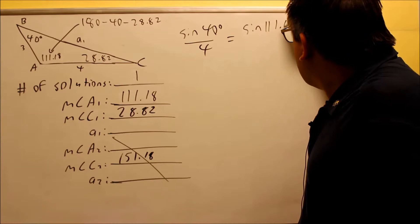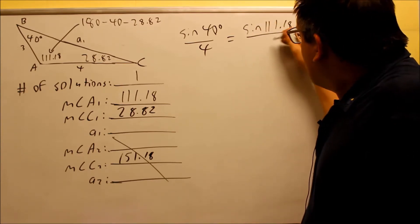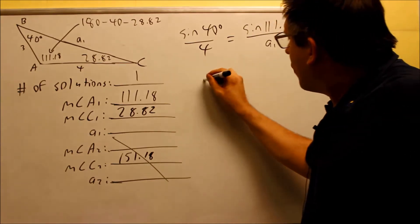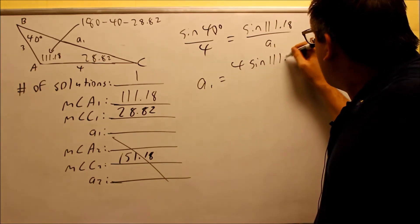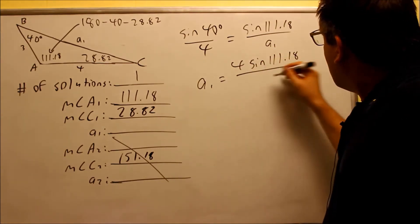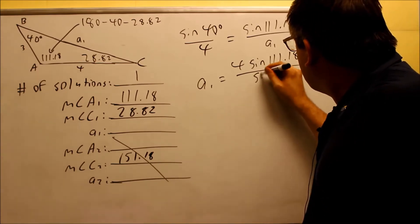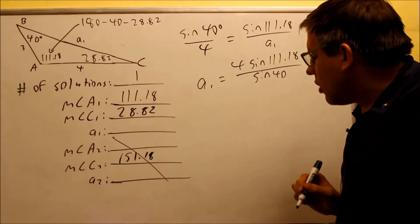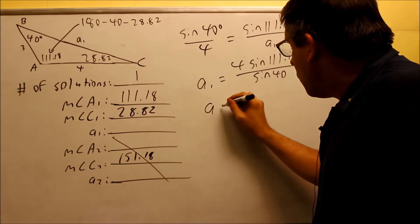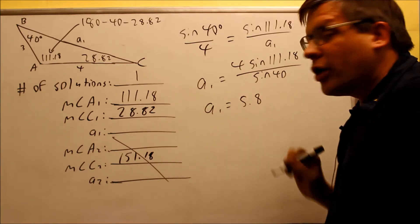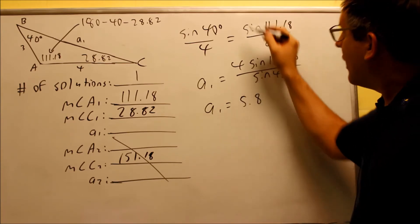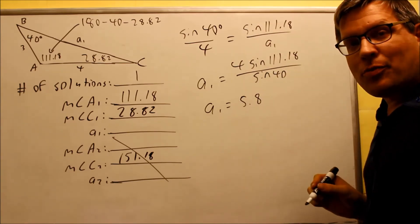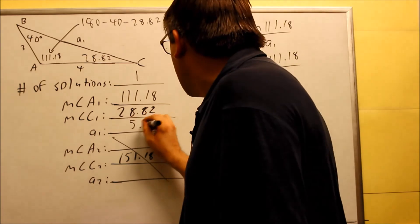So I'm going to do sine of 111.18 divided by A1. I'm going to solve for A1 directly here. So I'm going to do 4 sine 111.18, divide that by sine 40. So if I do all that, that's going to give me my A1. And that's going to give me 5.8 if I put that into the calculator. So again, what I did was I just did some cross-multiplying on that in order to get 5.8. So that's going to be my side right here, 5.8.